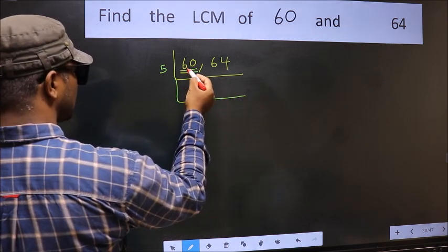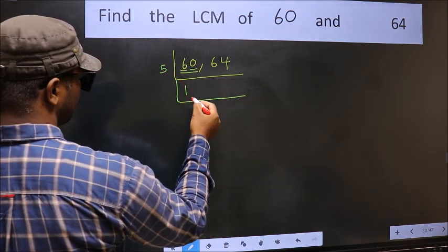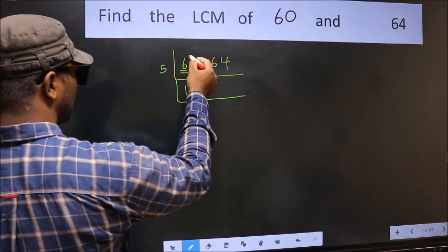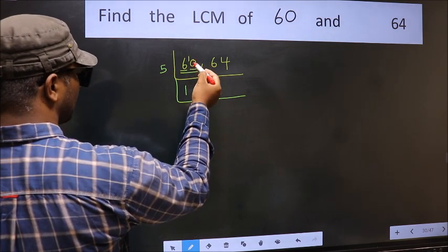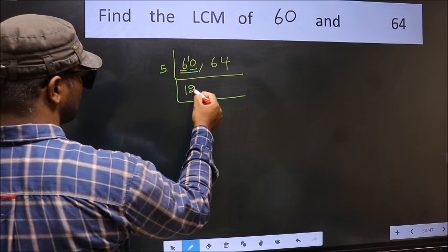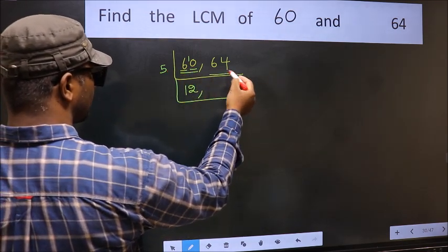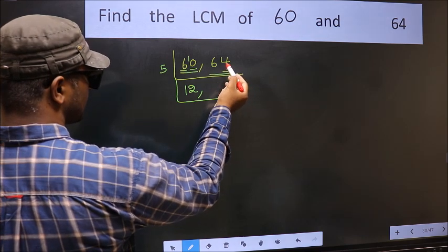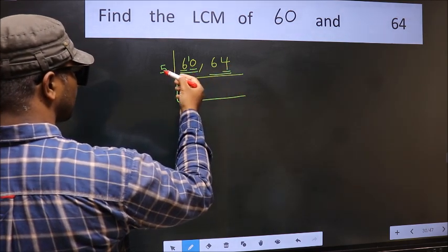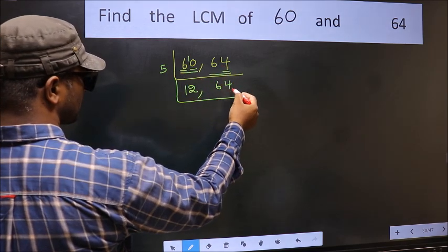The first number is 6. A number close to 6 in the 5 times table is 5 — 5 once is 5. 6 minus 5 is 1, carried forward to give 10. When do we get 10 in the 5 table? 5 twos are 10. The other number, 64 — the last digit is neither 0 nor 5, so it is not divisible by 5, so you write it down as it is.